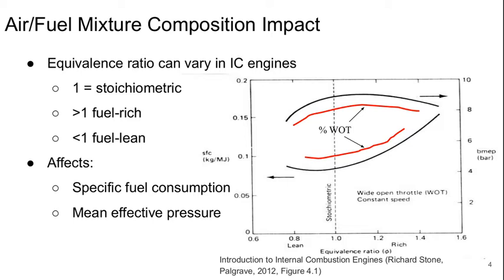The air-fuel mixture has an impact on the performance of the engine. The parameter normally used to characterize this is called equivalence ratio, and it can vary by operating point in internal combustion engines. An equivalence ratio of one means that the air-fuel mixture is exactly that needed for a stoichiometric chemical reaction. If the equivalence ratio is less than one, it means there's extra fuel, or it's fuel-rich. And if it's greater than one, it means there's excess air, or it's fuel-lean. This parameter affects the specific fuel consumption as well as the mean effective pressure achieved during engine operation.